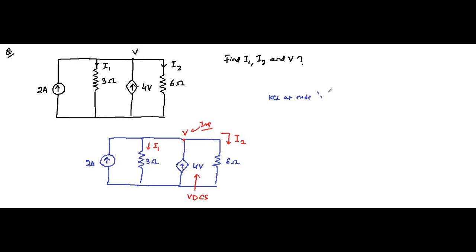At this node, all connected points share the same voltage V, because these two points are short-circuited — there is no resistor in between, so there is no voltage drop. These two nodes are the same point. Applying KCL: two currents flow into the node, that is 2 ampere and 4V, so that gives 2 plus 4V on one side. Two currents flow away from node V — one is i1 and another is i2 — so that gives i1 plus i2. This is the basic KCL equation.